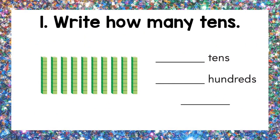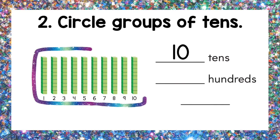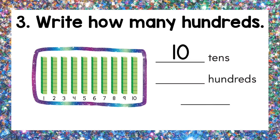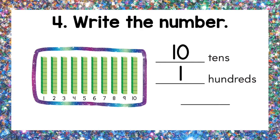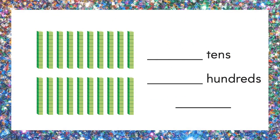To write how many tens there are, we must first count them: 1, 2, 3, 4, 5, 6, 7, 8, 9, 10. There are 10 tens. Next we must circle the group of tens. Now we write how many hundreds there are — remember that 10 tens is the same as 100. Since we circled one group of tens, we can write that there is only 1 hundred. Now we can write the whole number: 100.